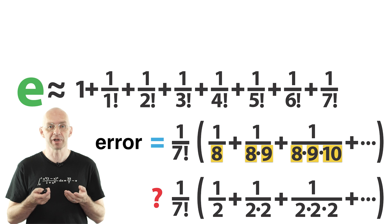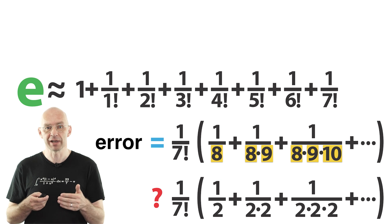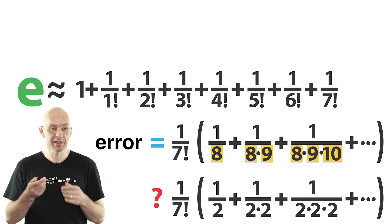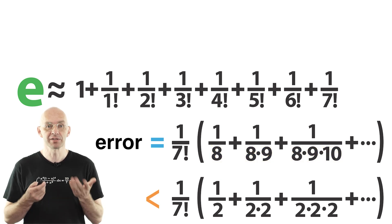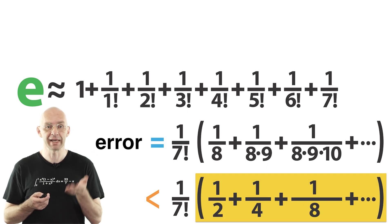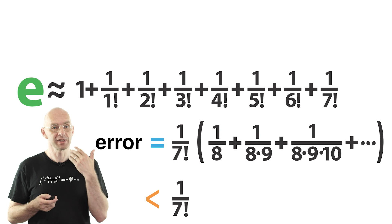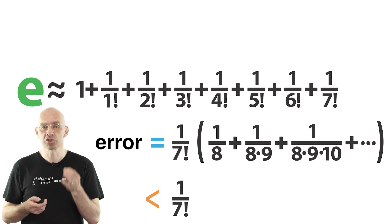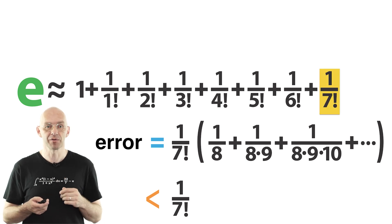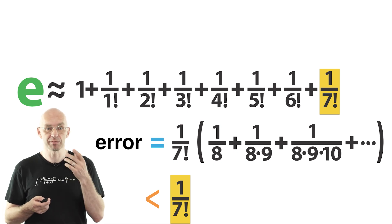Is this new simpler expression greater or smaller than the error? Well, we're going down in all the yellow denominators. So that means that the new expression has to be greater, right? But now it's really easy to see that in the brackets we have 1/2 plus 1/4 plus 1/8 and so on, which you all know is equal to 1, right? And so to summarize, the error we make by chopping the sum off at the 1 over n factorial's term is equal to 1 over n factorial. Which is very good because 1 over n factorial gets very small very quickly.